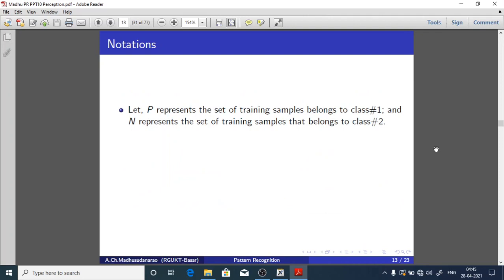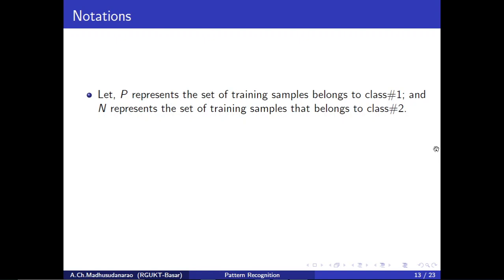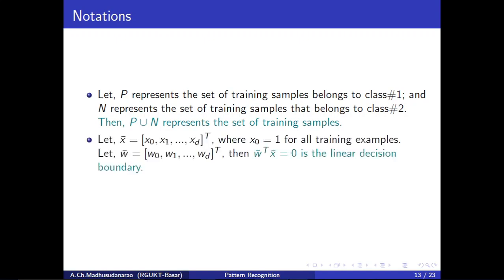Here are the notations we are going to follow. Let P represent the set of training samples belonging to class 1 (positive), and N represent the set of training samples belonging to class 2 (negative). P union N represents the full training set. Let x-bar = [x0, x1, ..., xd], a (d+1)×1 vector, where x0 = 1 for all training examples — this is just a notation with an extra x0 added.